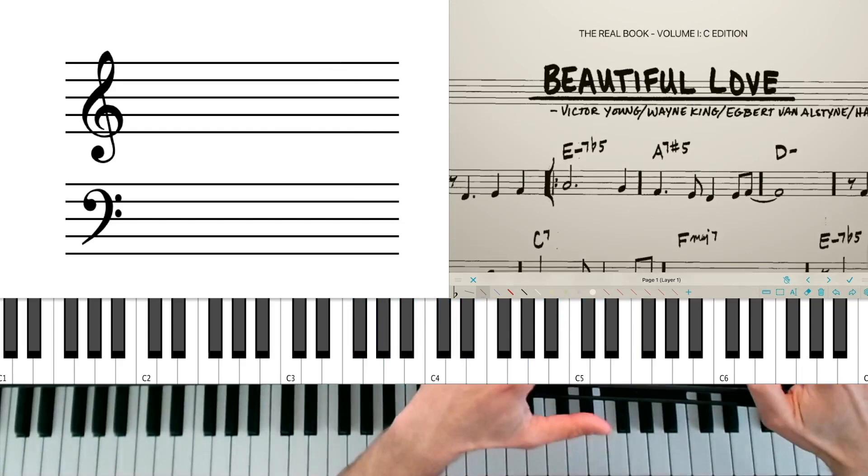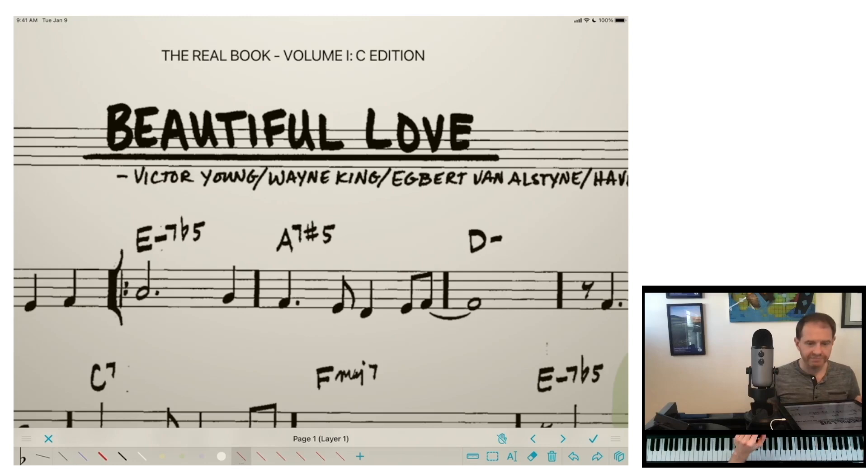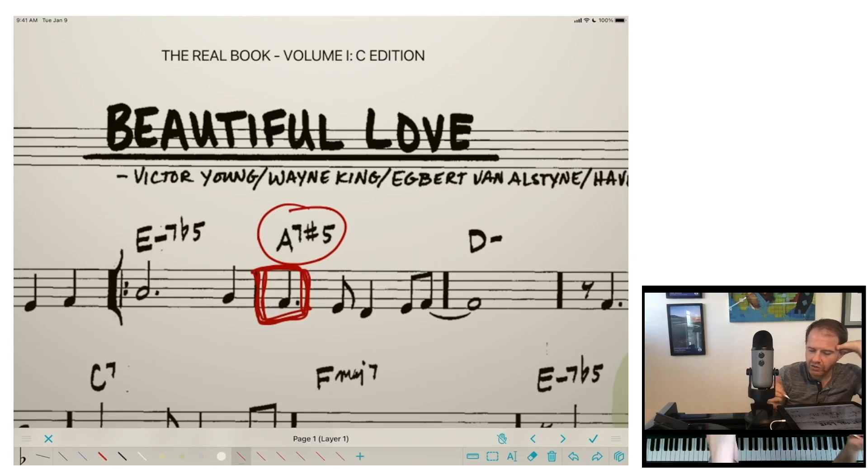All right, now, last but not least here, this beginning of the tune is just one of those places that really drives me crazy because I think they, from like a theory nerd perspective, I think they did a bad job here. So here they wrote A7 sharp five, which makes a bit of sense because we have the sharp fifth right on the downbeat in the melody. And so it makes sense that they would want to recognize that in the chord symbol.